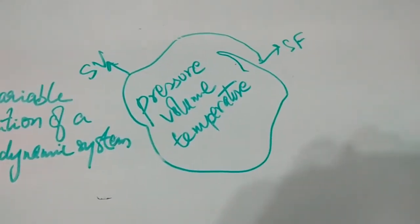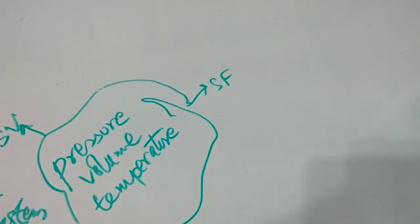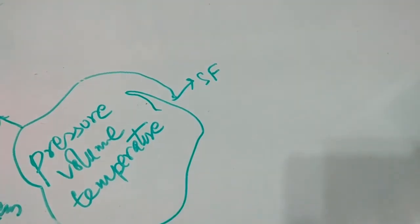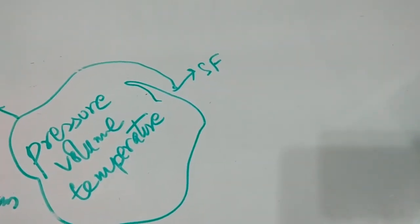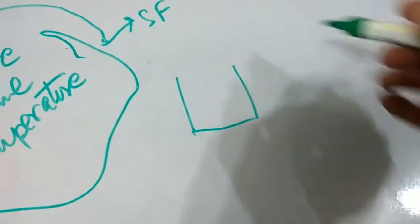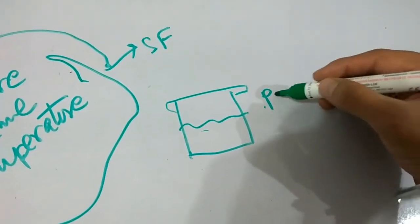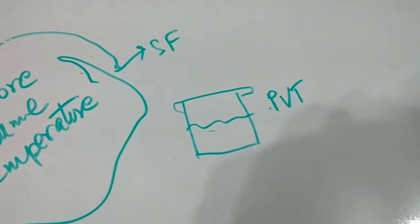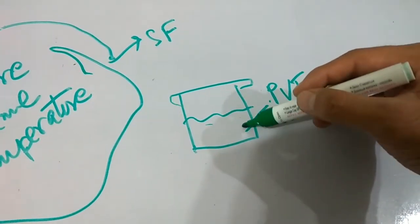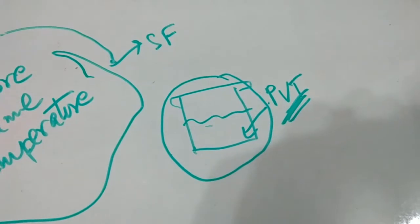State functions are something which depend on the current state of the system and do not depend on the path followed to reach that value. Like, in a present system — let us say this is a system — in this system there is a pressure P, a volume V, and temperature T. These are the state variables which will be used to describe the condition of this thermodynamic system. That is the job of a state variable.